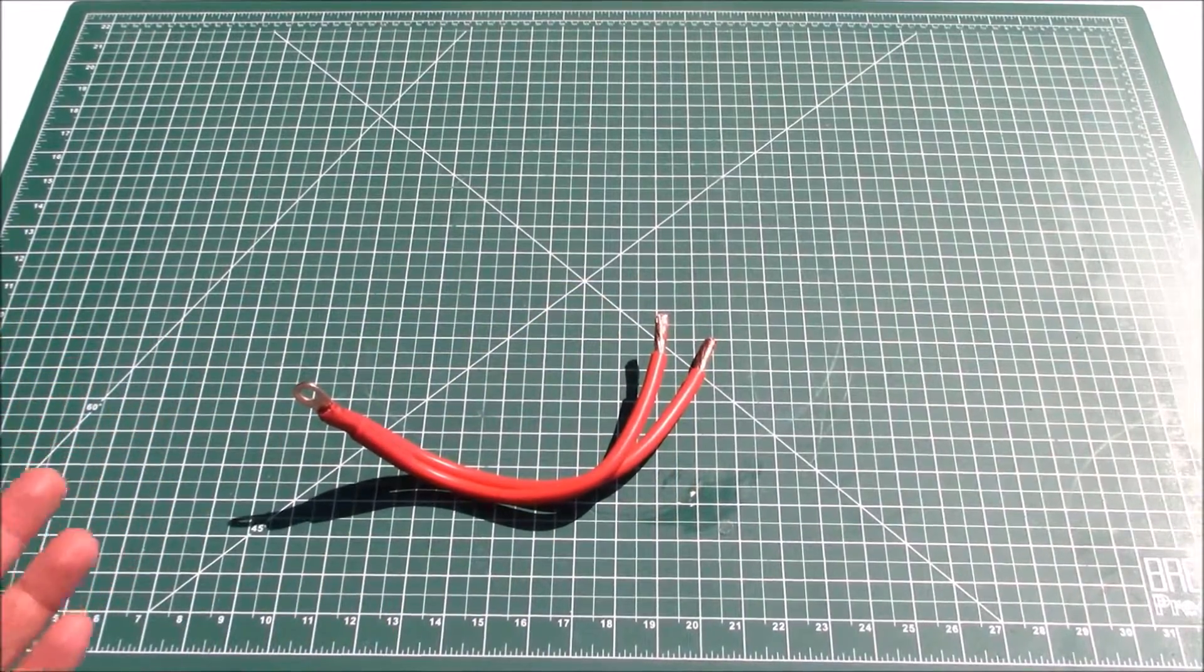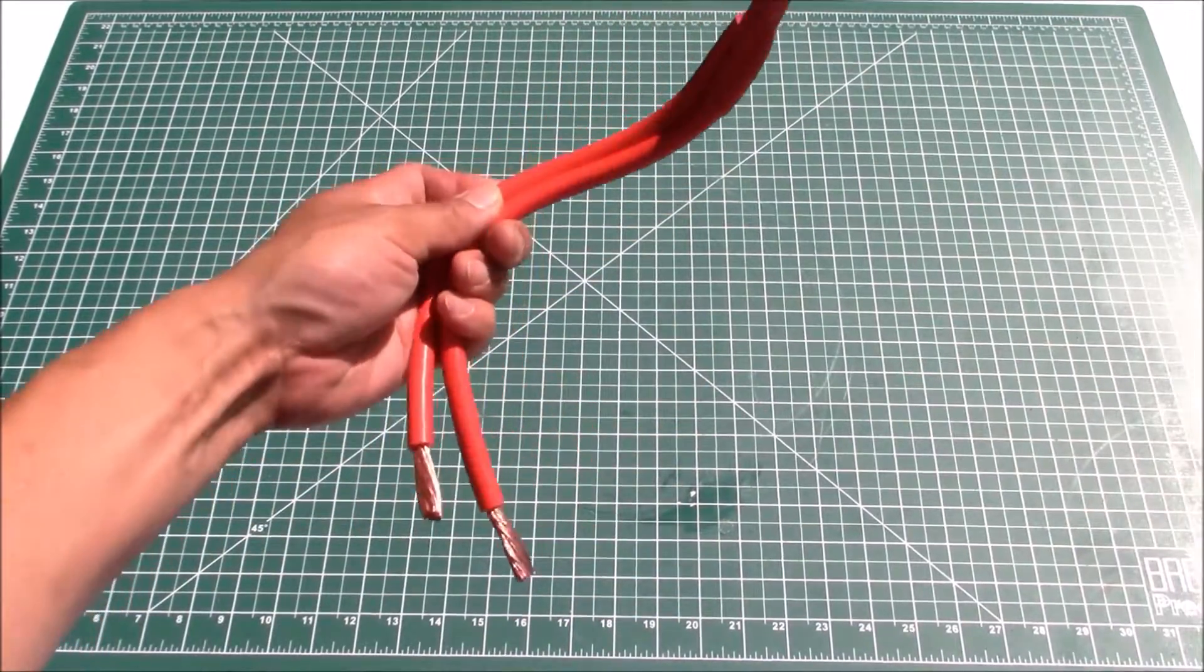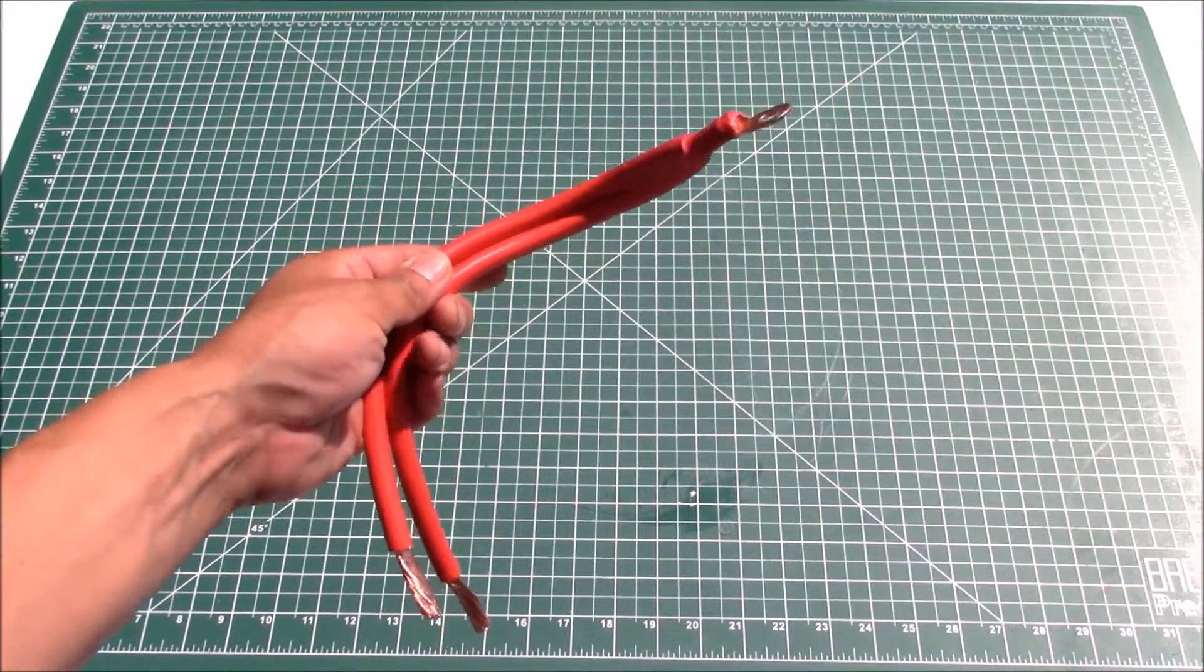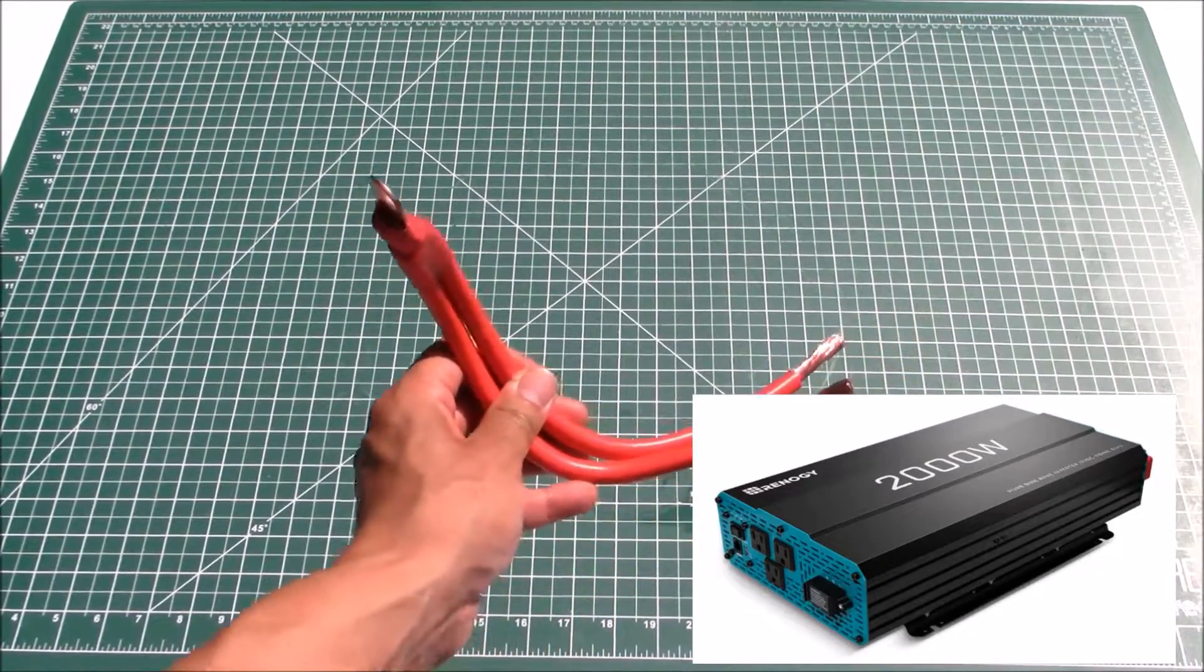The first step is to identify the size of the wire that you've got. Let me show you this wire that I'm working with. This is actually kind of an interesting wire. It came shipped from the factory like this. This goes to my inverter that I'm using in my camper van setup.